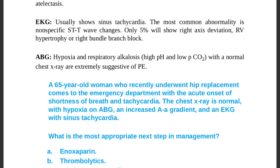Hypoxia, respiratory alkalosis, high pH, and low PaCO2 with a normal chest x-ray are extremely suggestive of pulmonary embolism. The patient is hypoxic and in respiratory alkalosis — these ABG findings together with a normal chest x-ray are highly suggestive of PE.